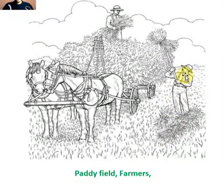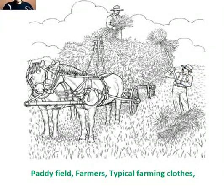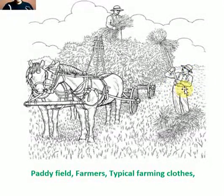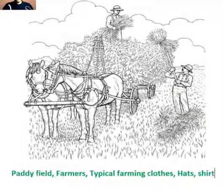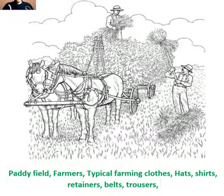What are they wearing? They're wearing typical farming clothes. These clothes include hats, shirts, and thin belts called retainers. They're also wearing belts around their waists, trousers, and shoes. These are the things they wear when they work in the field normally.